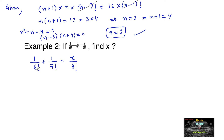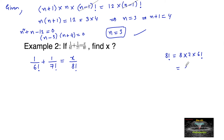Let's use the concept of LCM. In the denominator on the left side we have 6 factorial and 7 factorial, and on the right side we have 8 factorial. We know that 8 factorial is equal to 8 into 7 into 6 factorial, or we can also write it as 8 into 7 factorial.